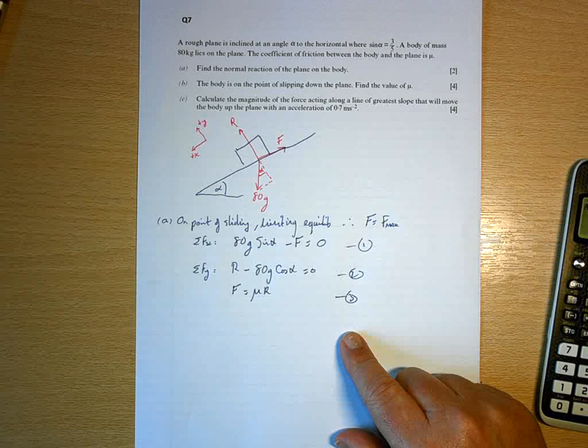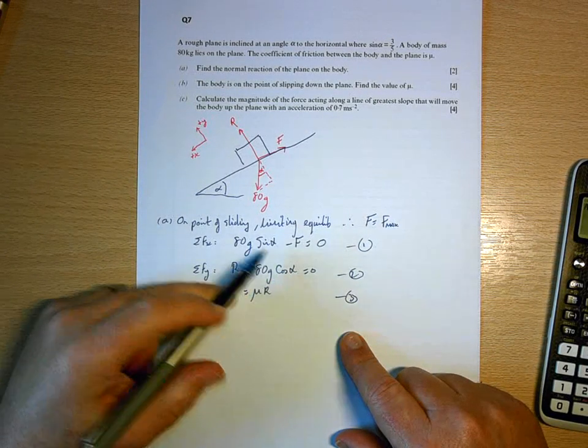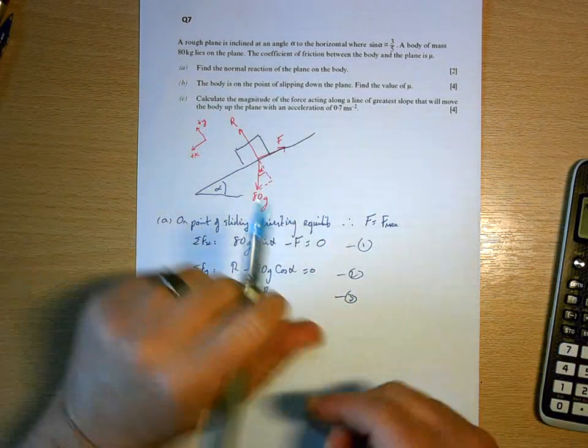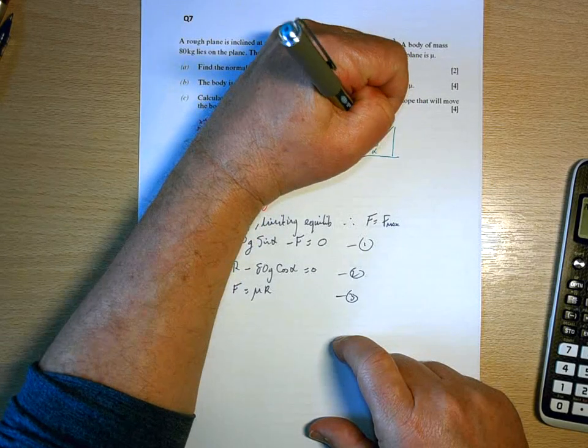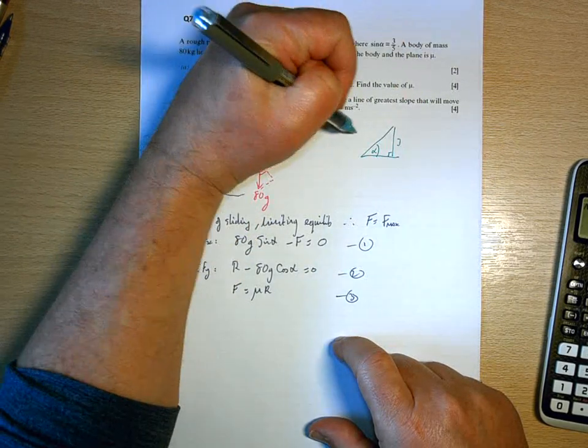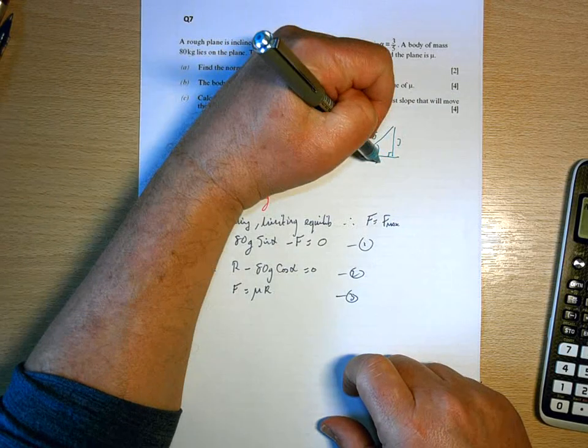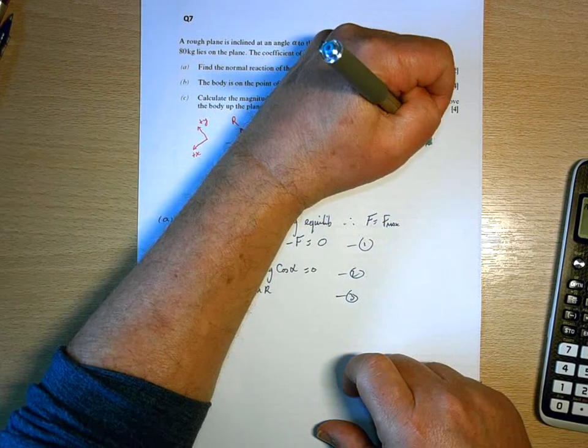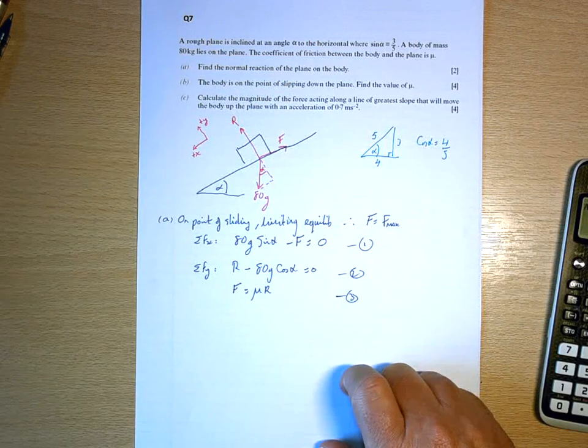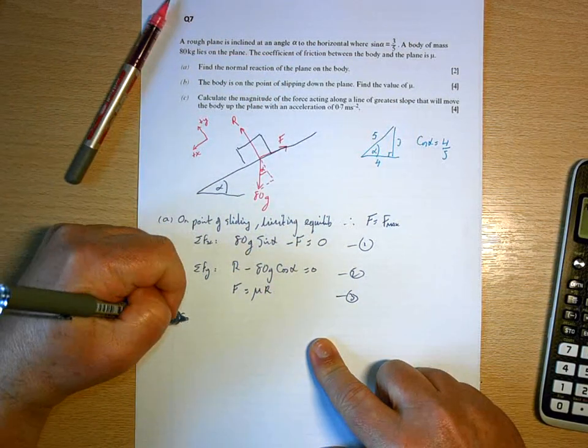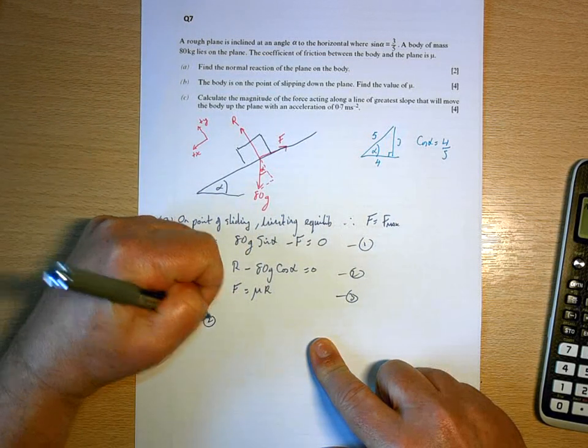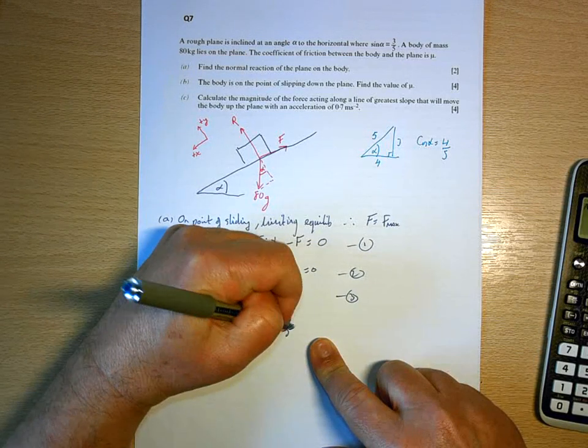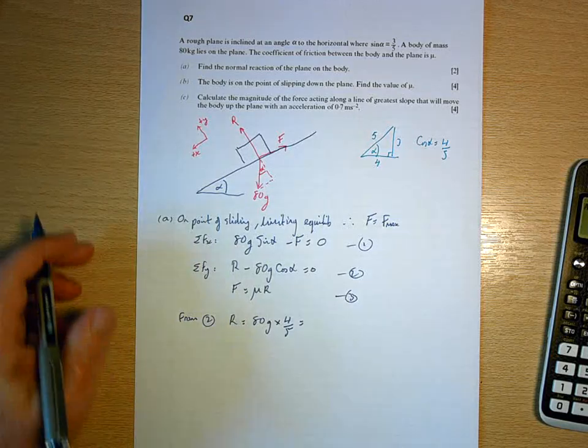What do I want to find? I want to find the normal reaction, which I can get straight away from equation two, and then the value of mu. I know that sine of alpha is three-fifths, so opposite is three, hypotenuse is five, which means cos of alpha - the Pythagorean triple there, three-four-five - cos alpha will be adjacent over hypotenuse. So from two, R will be 80g times four-fifths.